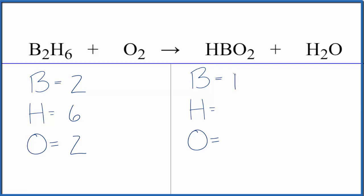Product side we have one boron, hydrogens we have one, don't forget these here, so we have a total of three. Oxygens, two plus this one over here, so we have three oxygens as well. So make sure you count those up correctly.